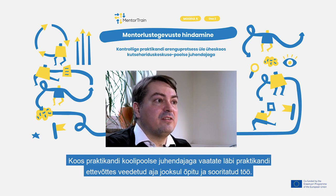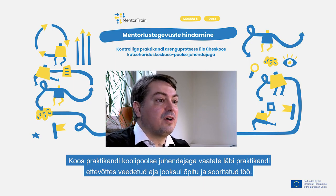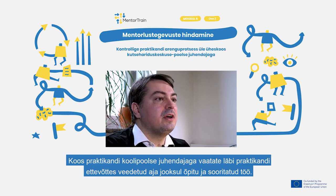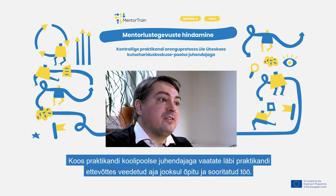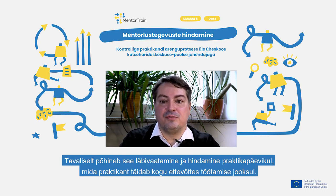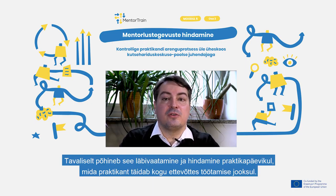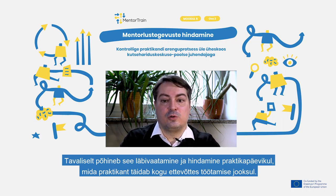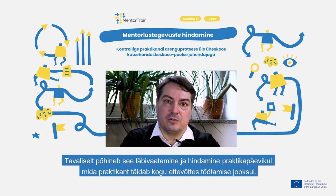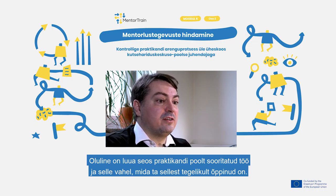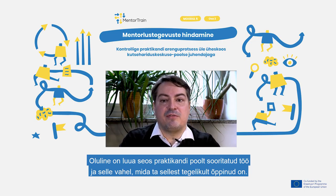Together with the apprentice's school supervisor, you review the work and learning the apprentice has done while they were at your company. Normally, this review and evaluation is based on a notebook that is being filled in by the apprentice throughout their work with you. It is important to make the link between the work the apprentice has done and what they have actually learned from it.